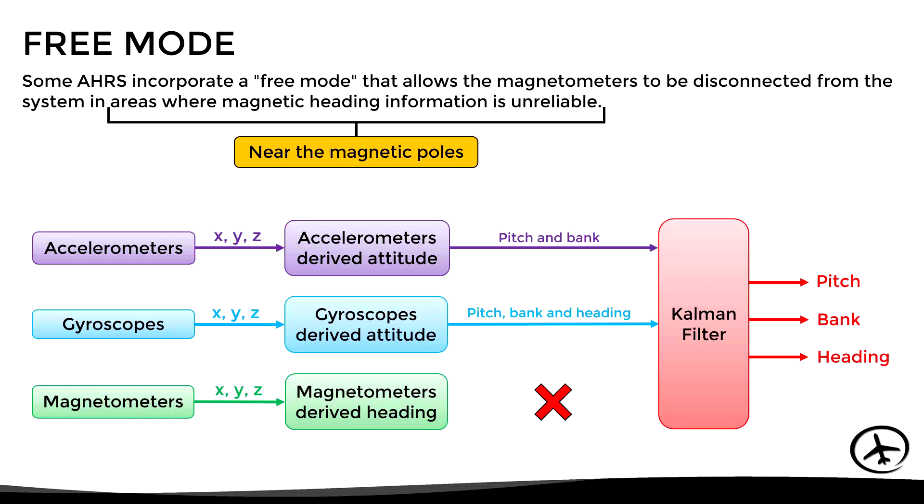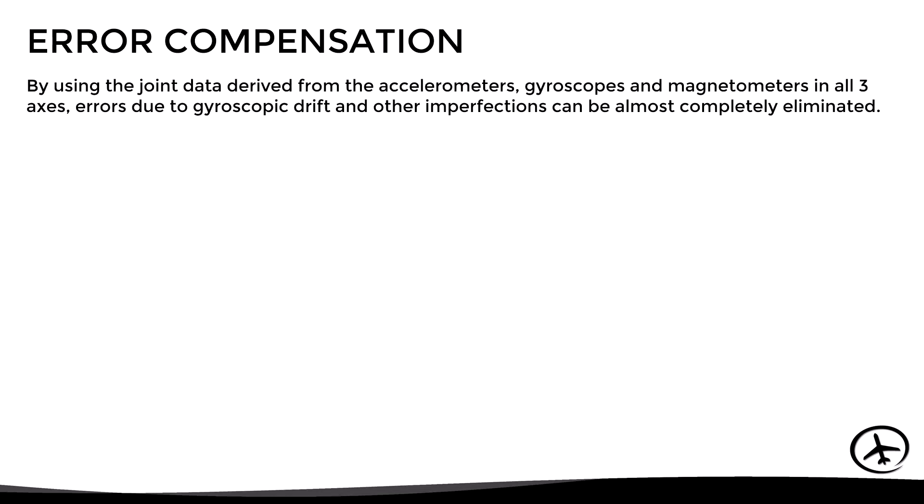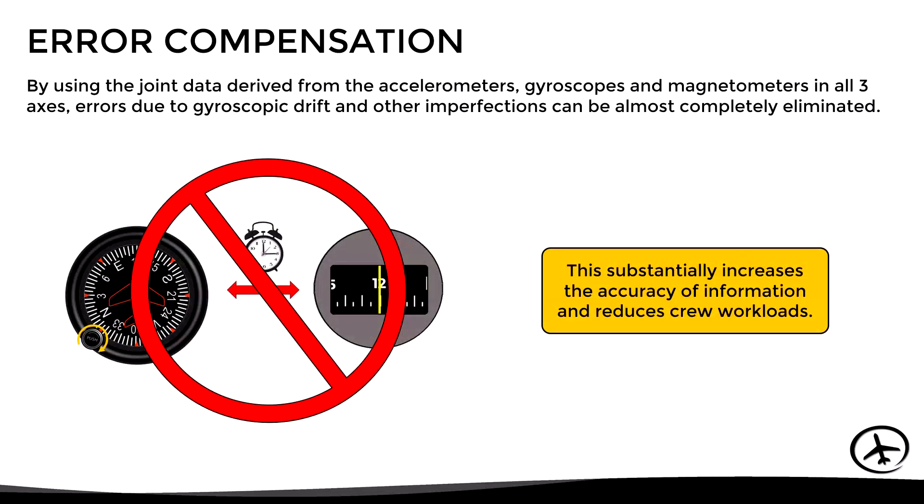Now that we have seen how the sensors of a MEMS system work, the Kalman filter allows for error compensation. By using the joint data derived from the accelerometers, gyroscopes, and magnetometers in all three axes, errors due to gyroscopic drift and other imperfections can be almost completely eliminated. This substantially increases the accuracy of information and reduces crew workloads, since manual corrections are no longer necessary.